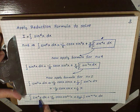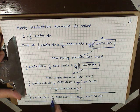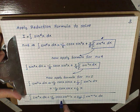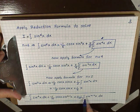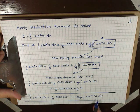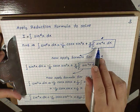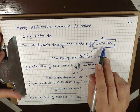The integral of sin^6(x) dx = -1/6 cos(x) sin^5(x) plus (6-1)/6 times the integral of sin^4(x) dx, which is 5/6 times the integral of sin^4(x) dx.